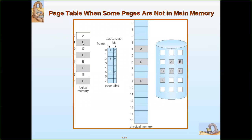Let us illustrate this pictorially. Consider this logical memory with seven pages. Not all seven pages are in main memory — only three free frames are available. For example, page 0 is placed in frame 4 and its validity is set to V. Page 1 has no space, so it is marked I — invalid, not present in main memory but present in secondary storage. Similarly, pages A, B, C, D are all present in secondary storage.